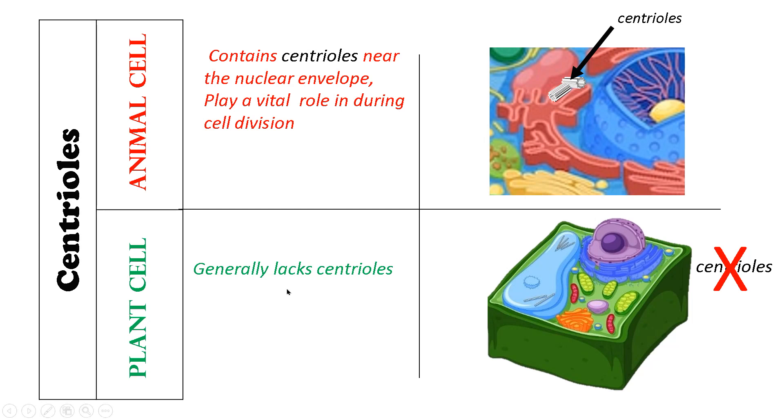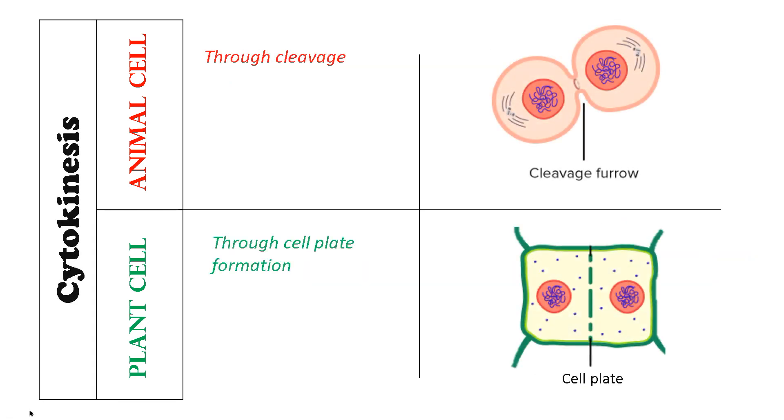Coming to the next parameter of difference, that is cytokinesis. Cytokinesis means division of the cytoplasm. In case of an animal cell that has to divide into two daughter cells, this division starts in the form of a cleavage furrow from periphery towards center.